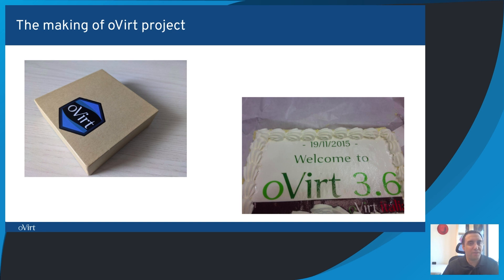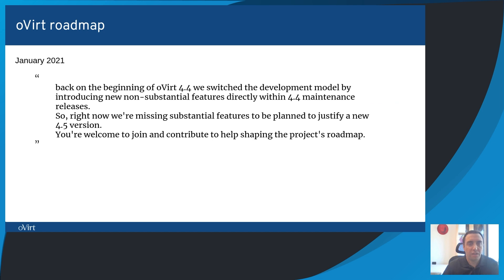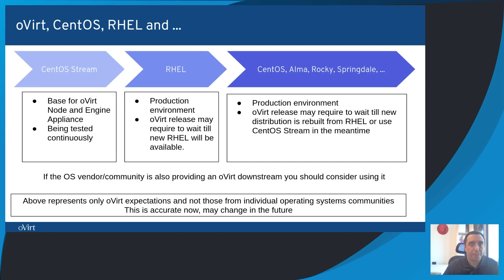If you're wondering how you can help, you'll hear today a presentation from Lev Veide about contributing to oVirt. Now that you know how oVirt is made, I would expect you to join in helping with the planning of the next release. Back in January, I wrote to the user mailing list about current plans regarding oVirt 4.4 and 4.5. Back then, we were missing a substantial feature set to justify a new 4.5 version. Starting in 4.4.6, the oVirt project switched to CentOS Stream 8 as the base platform.